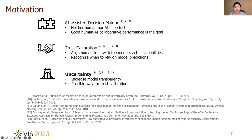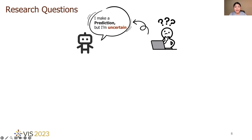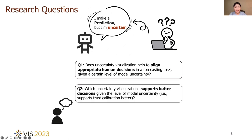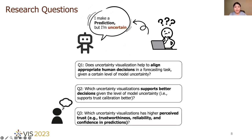As such, we were curious about whether uncertainty visualizations can calibrate human trust in AI model. Specifically, we propose three research questions. Does uncertainty visualization help to align appropriate human decisions given a certain level of model uncertainty? Which uncertainty visualization supports better decisions given the level of model uncertainty? Which uncertainty visualization has higher perceived trust?